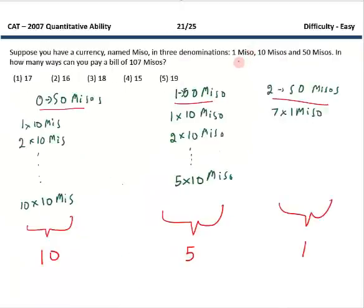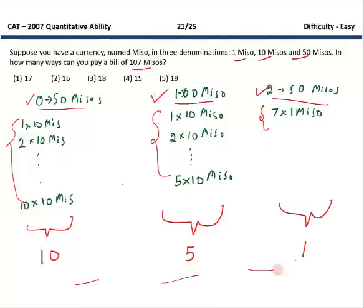We have three different denominations of currency: 1 unit, 10 unit and 50 unit. We have been asked in how many ways can we pay a bill of 107. We will get the answer by first counting 50 pesos, the biggest unit. If we have 0 of that then we can use the 10s from 1 to 10, so that makes it 10. If we have 1 of 50 peso then we can use 5 ways the 10 peso coin. If we have 2 of them then we can use it only once. So the total number comes 10 plus 5 plus 1 equals 16.